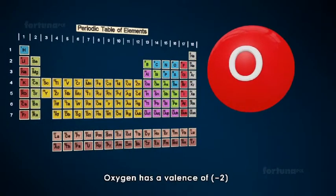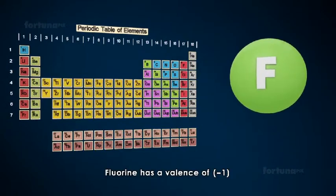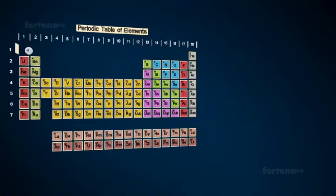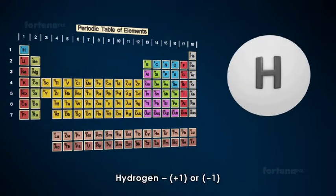Oxygen has a valence of minus 2. Fluorine has a valence of minus 1. Hydrogen has only one electron so it can have a valence of plus 1 or minus 1.